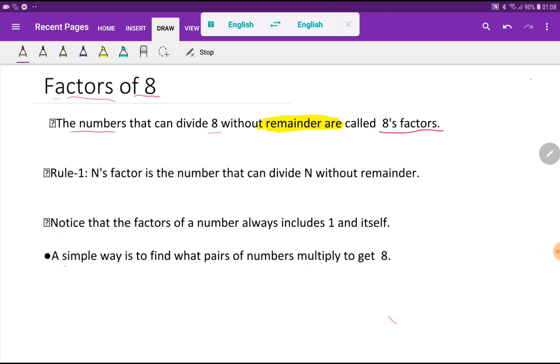Look at here. What is factor? The number n's factor is the number that can divide n without remainder. Notice here, the factors of a number always include 1 and itself.